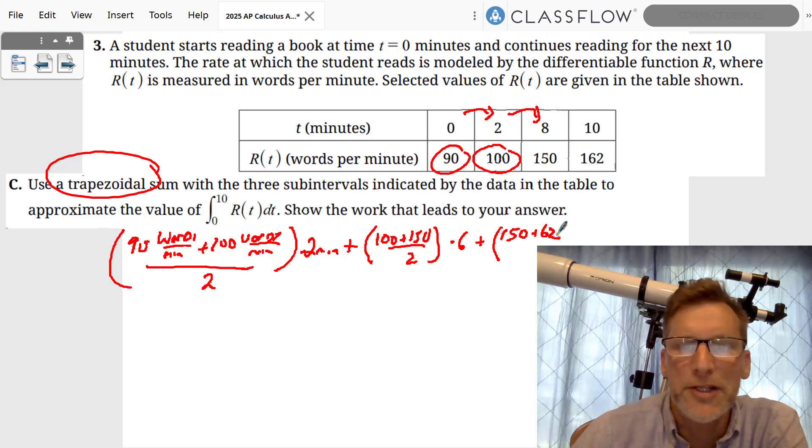Plus, we take the next, 150 plus 162—that is 162—divided by 2 times what's the difference? It's 2.